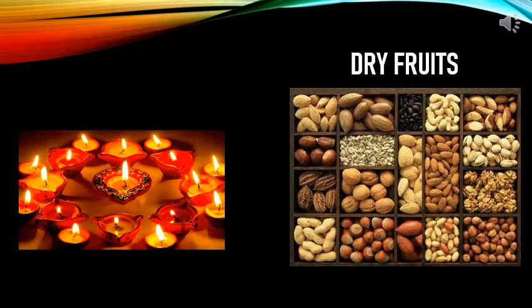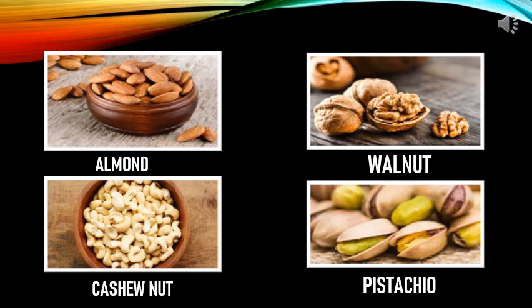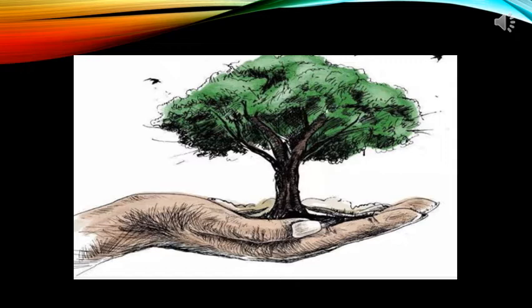At the time of Diwali, you must have seen relatives and friends visit your house and give dry fruits as a gift. Dry fruits also we get from plants. Here are some examples of dry fruits: almond, walnut, cashew nut, and pistachio. With this, we know that most of the food we get comes from plants. Plants are very useful for us — we should not harm them. We should save trees and never pluck leaves or flowers unnecessarily.